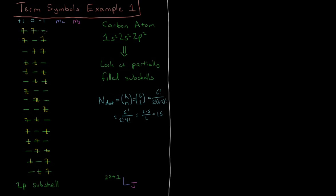So there should be 15 distinct ways to arrange two electrons in six spin orbitals — three spatial orbitals with a choice of spin up or spin down. These 15 configurations are already drawn out. We have cases where both electrons are spin up, both are spin down, where they're paired together in a single orbital, and where one is spin up and one is spin down in different orbitals.